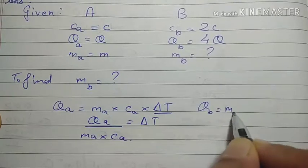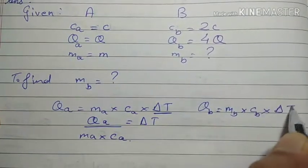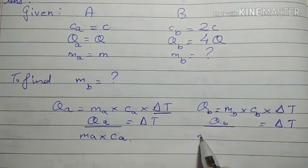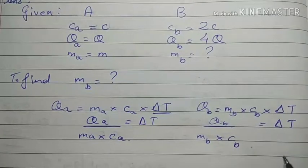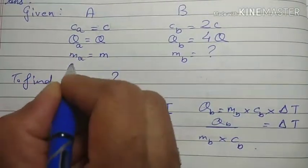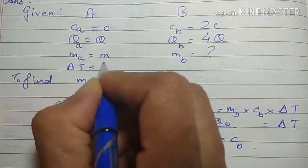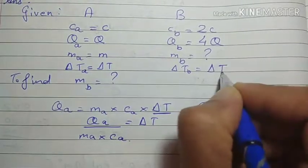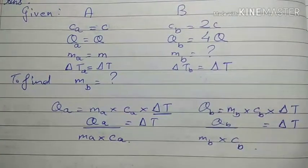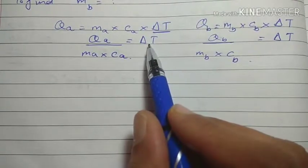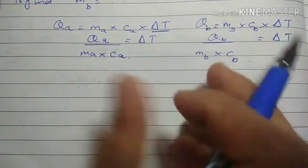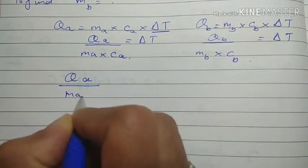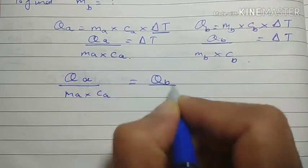Similarly, if we write q_B equals m_B into c_B into ΔT, and get the equation in terms of ΔT, we get ΔT equals q_B upon m_B times c_B. Since the change in temperature is the same for both, delta T equals delta T, so let's equate both equations: q_A upon m_A times c_A equals q_B upon m_B times c_B.